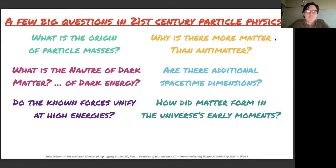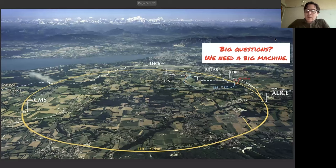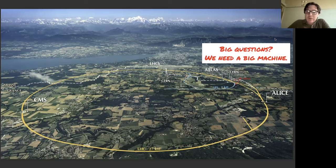As a particle physicist, I'm motivated by big questions in 21st century physics — such as the nature of dark matter or why there is more matter than antimatter in the universe. As particle physicists we try to advance our knowledge by studying particles and their properties. To answer big questions it helps to have a big machine. The Large Hadron Collider is a 27-kilometer-long hadron collider that produces proton-proton collisions and heavy ion collisions, sited at CERN near Geneva, with the Alps in the background.